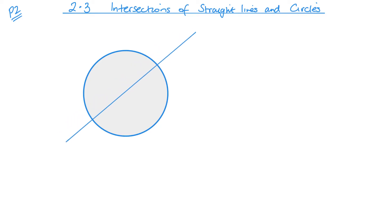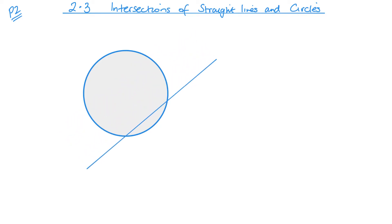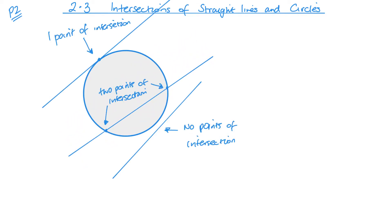Here's a diagram just showing you: one point of intersection, two points of intersection, no points of intersection. Those are our only three options when we look at straight lines and circles.